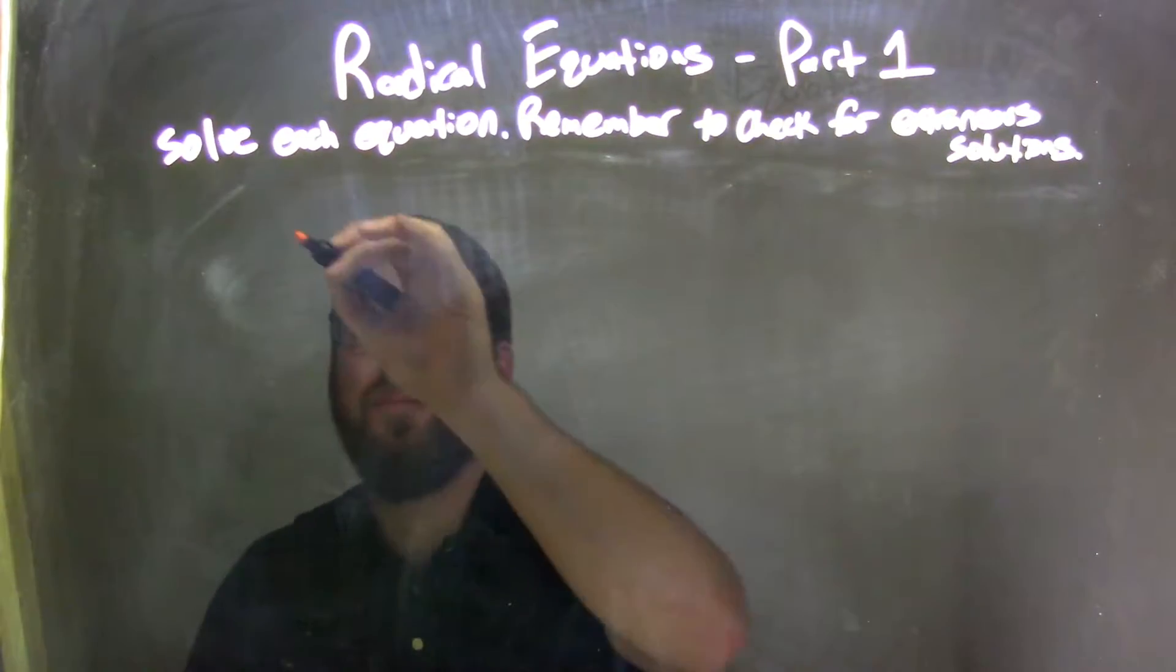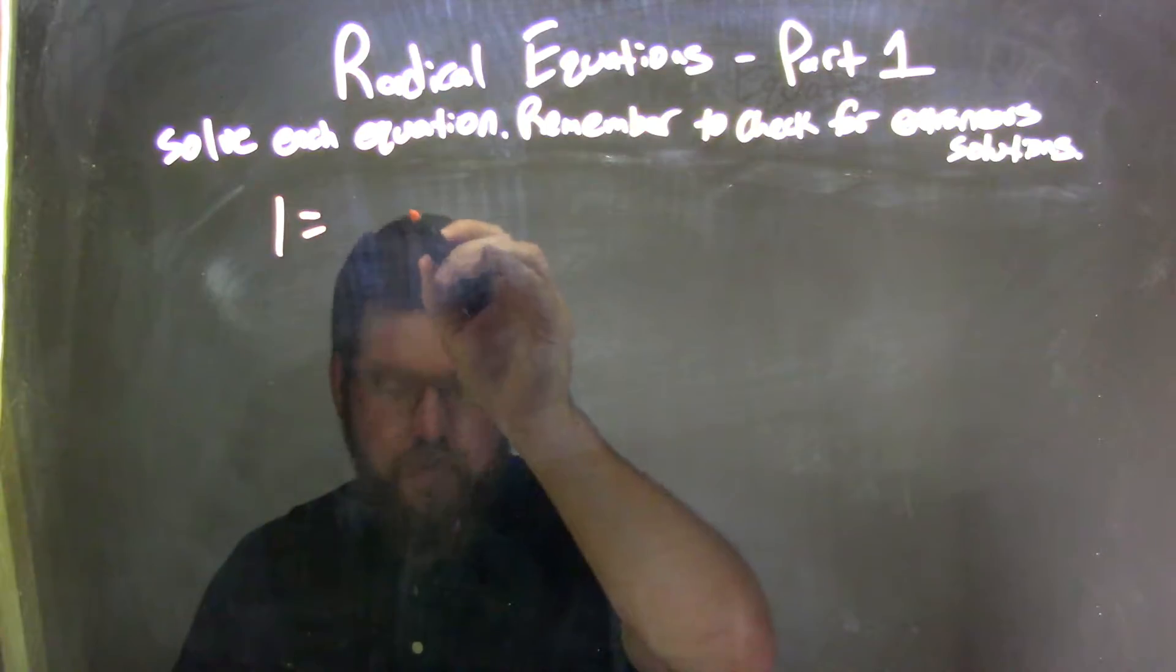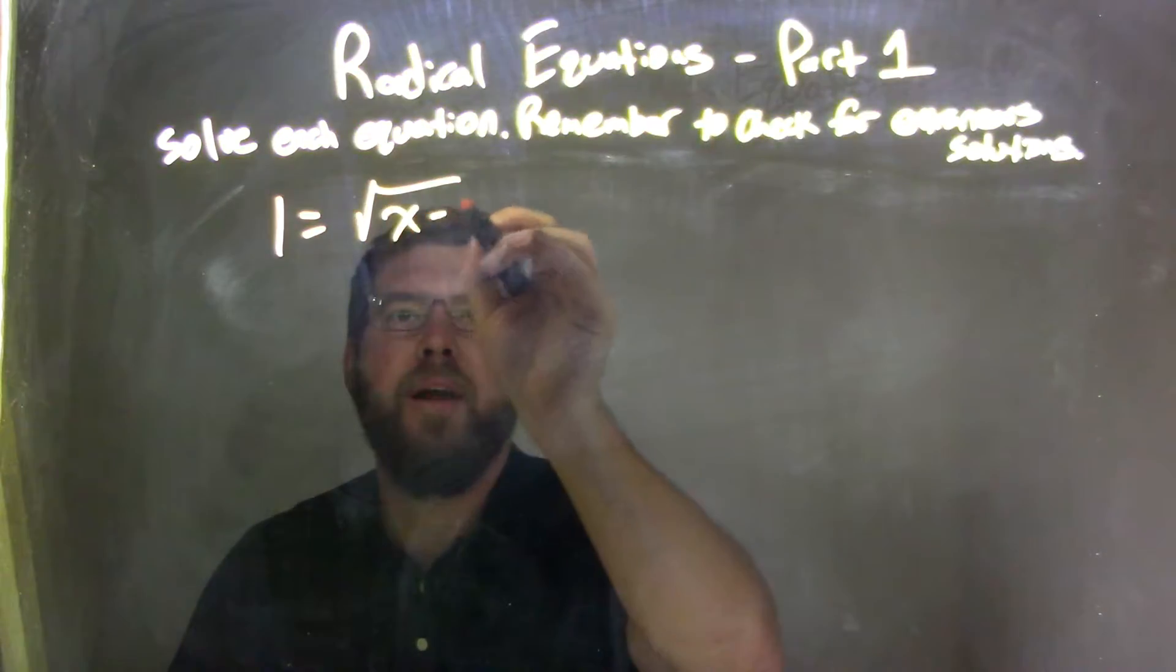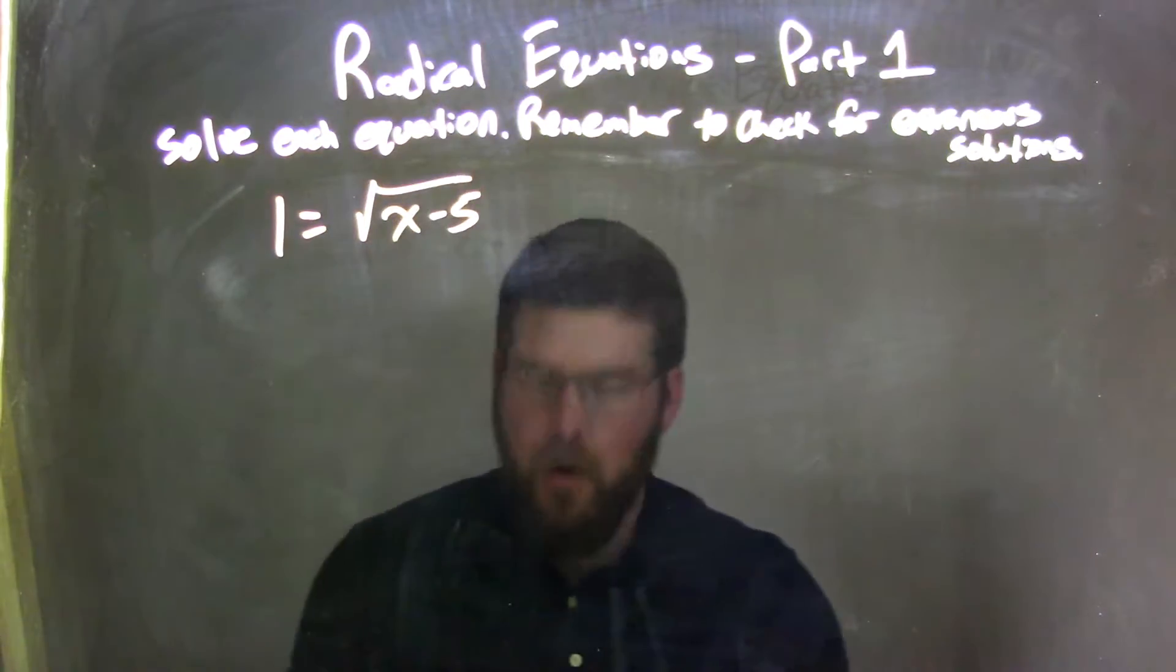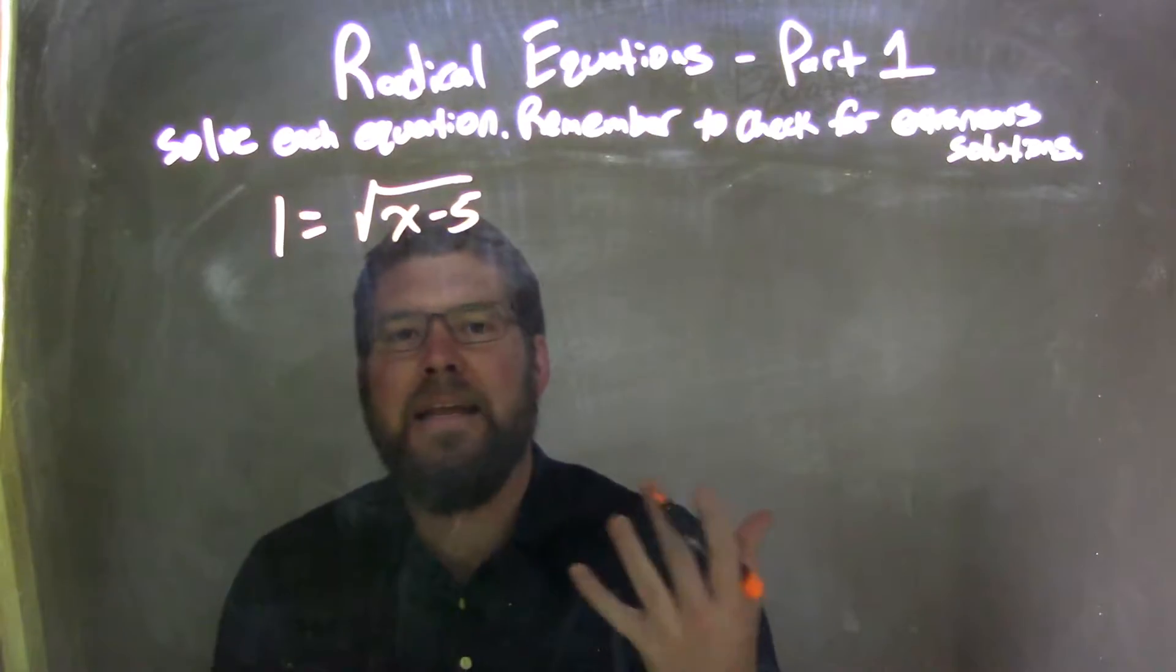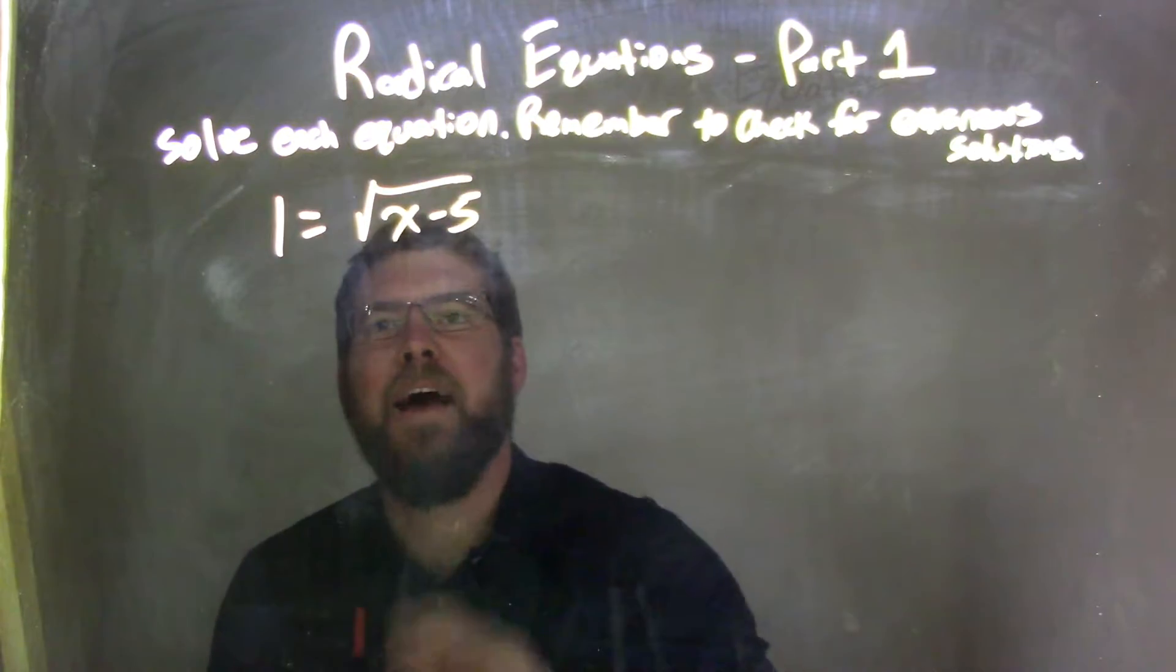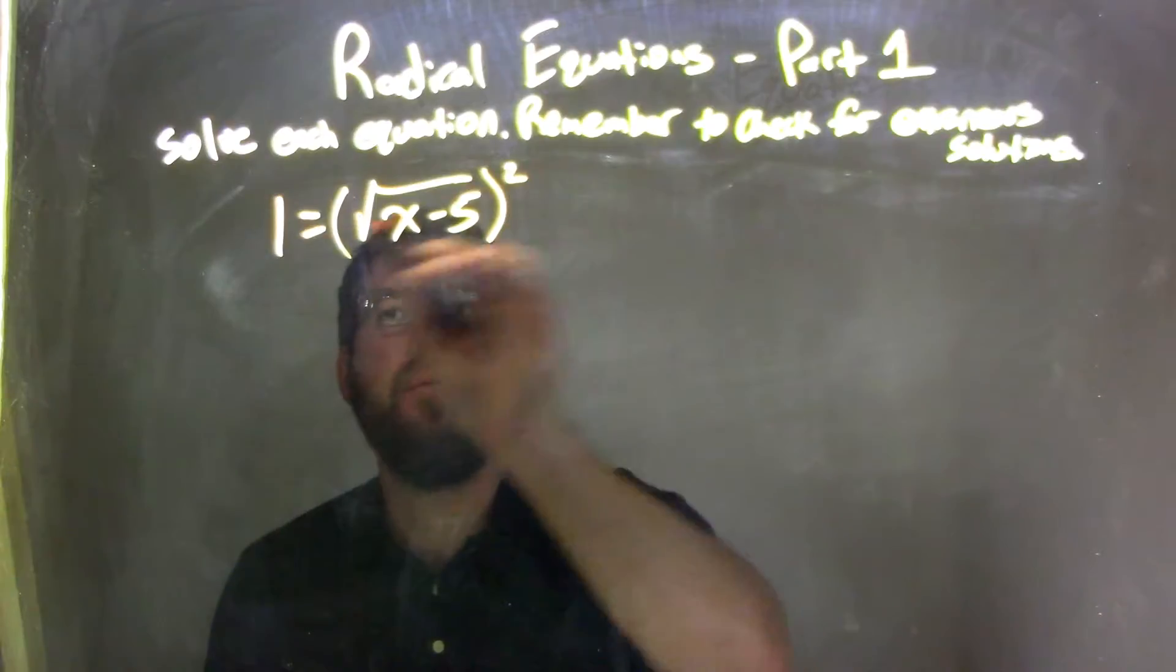If I was given this equation, 1 equals the square root of x minus 5, I see there's a square root I need to eliminate. It's isolated, so I'm going to square both sides.